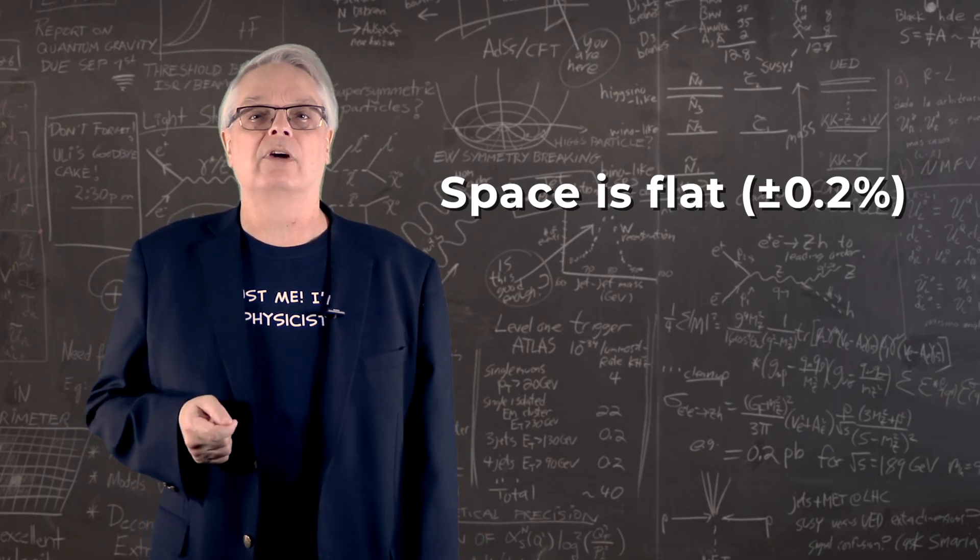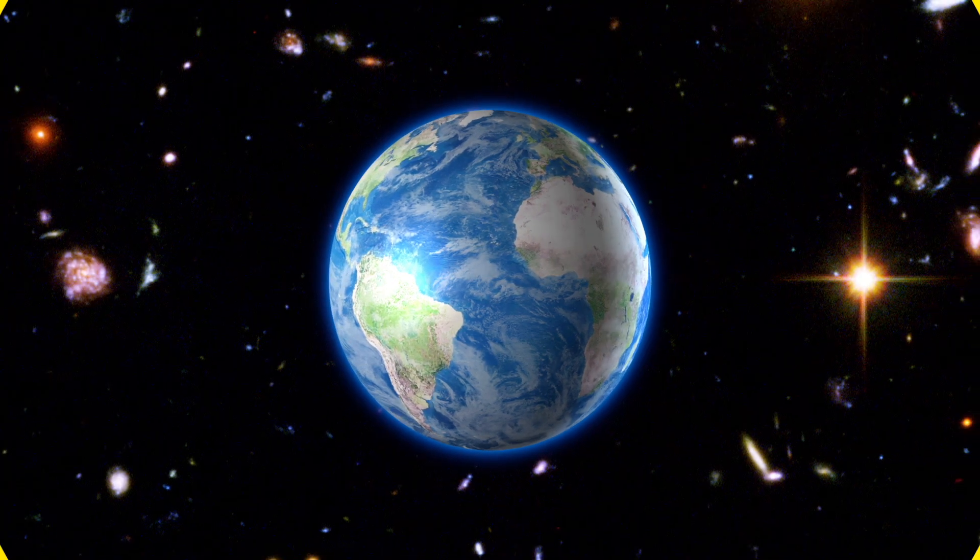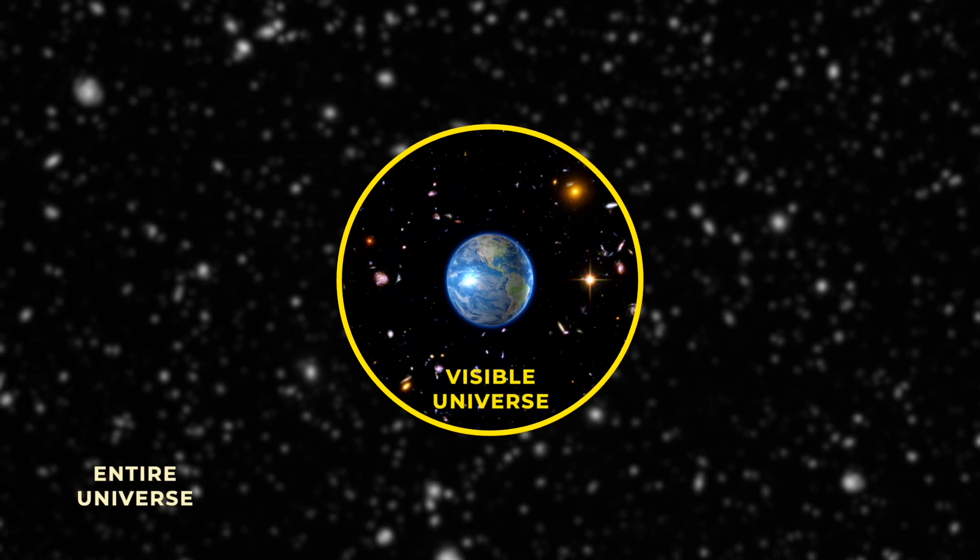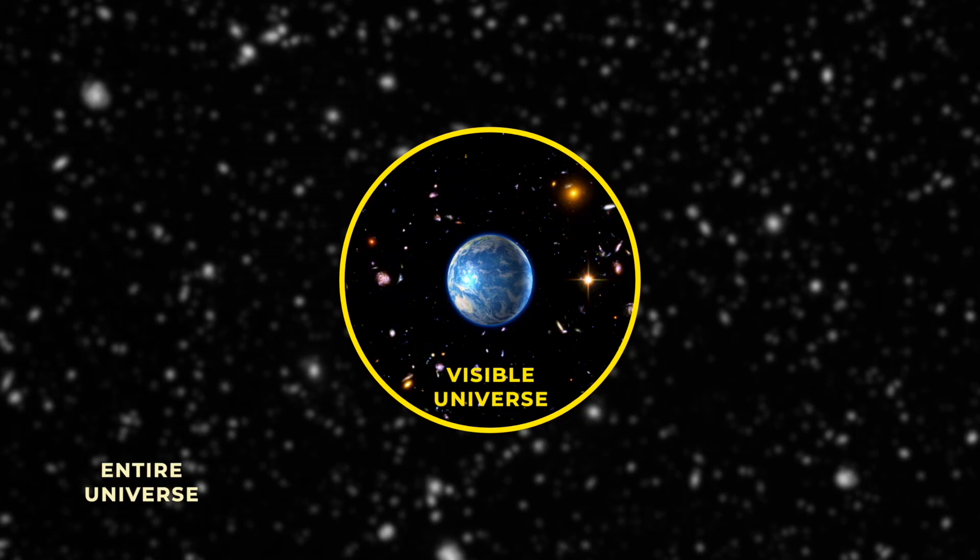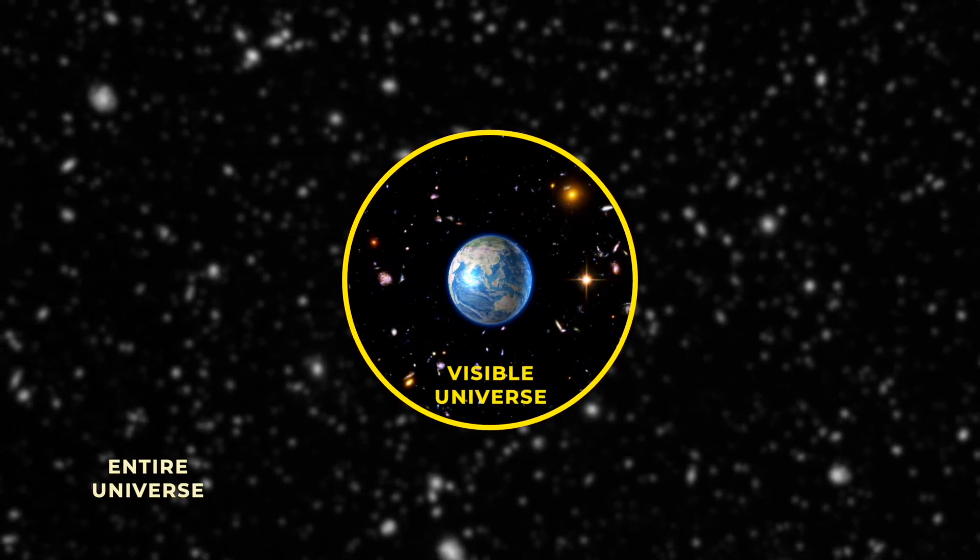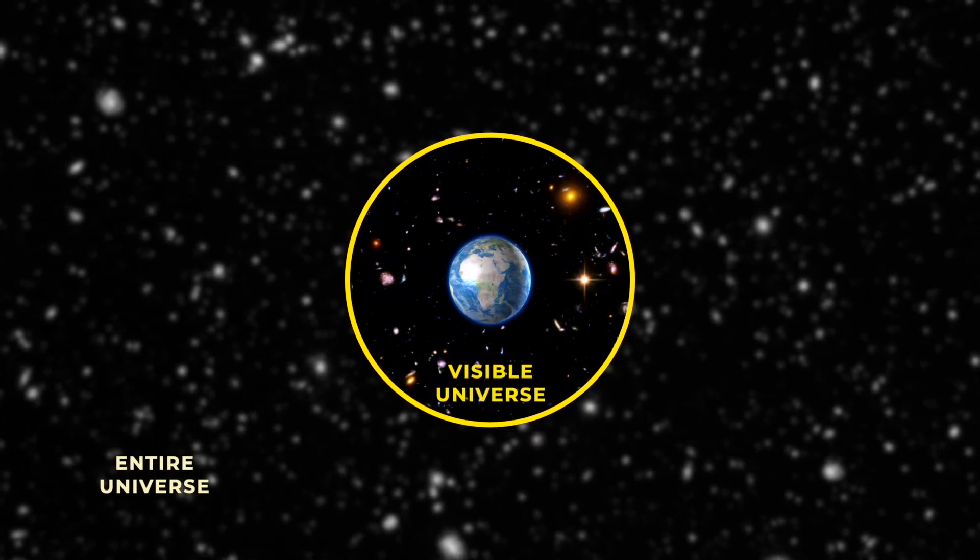This maximum curvature of 0.2% means that the universe is bigger than we can see, with the total universe having a radius of at least 500 times bigger than the visible universe. And that means that the volume of the entire universe is at least 125 million times bigger than the universe we can see. It could be even bigger.